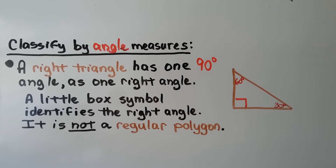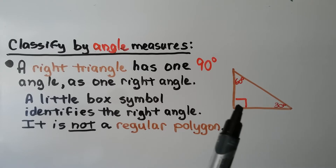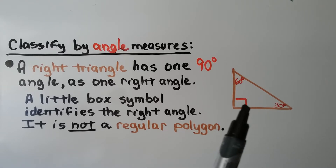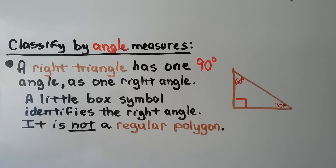We can also classify a triangle by angle measures. A right triangle has one 90-degree angle — one right angle. The little box symbol identifies the right angle. It is not a regular polygon.